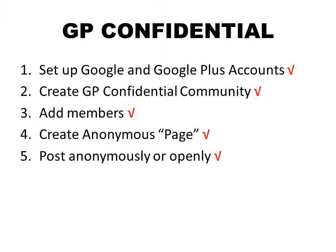So, you should now be able to set up a Google and Google Plus account if you haven't done so already — if you need help, there are guides available on YouTube and elsewhere. I've shown you how to set up a private Google Plus community, how to add members to that community, and how to set up a page to allow members to post anonymously and associate the page with the community, making all members managers of that page. And lastly, I've shown you how any member of the group can post either anonymously or openly within the group.